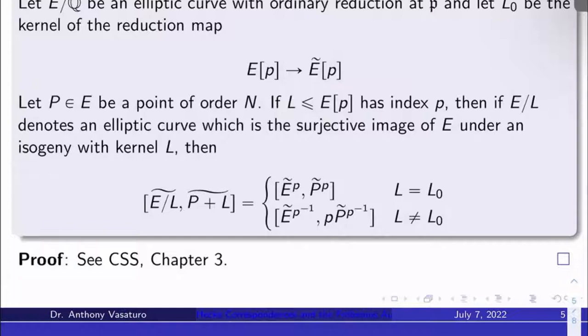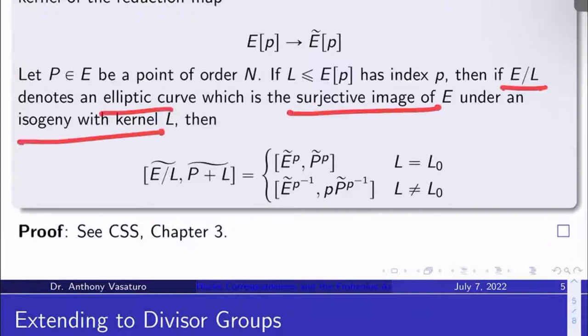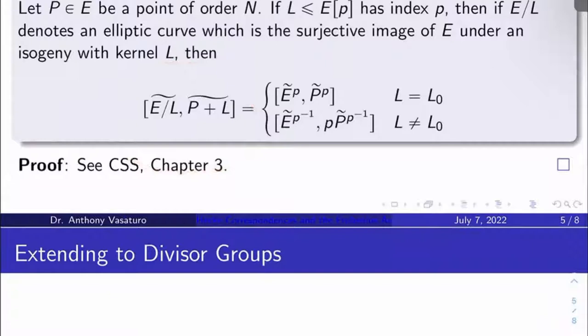Then if E/L denotes an elliptic curve, which is the surjective image of E under an isogeny with kernel L, we've used this exact notation for this exact thing before recently. Then you might ask, can I describe the enhanced elliptic curve class of the reduction of [E/L, P + L] in terms of nothing but enhanced elliptic curve classes having to do with the reduction of just E and P?